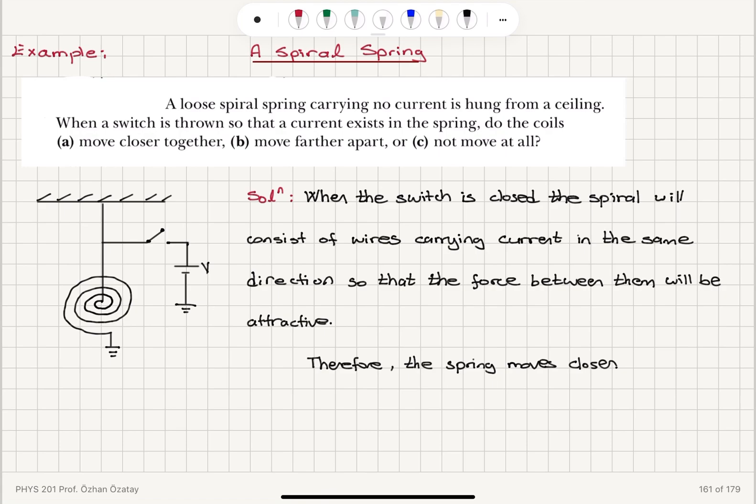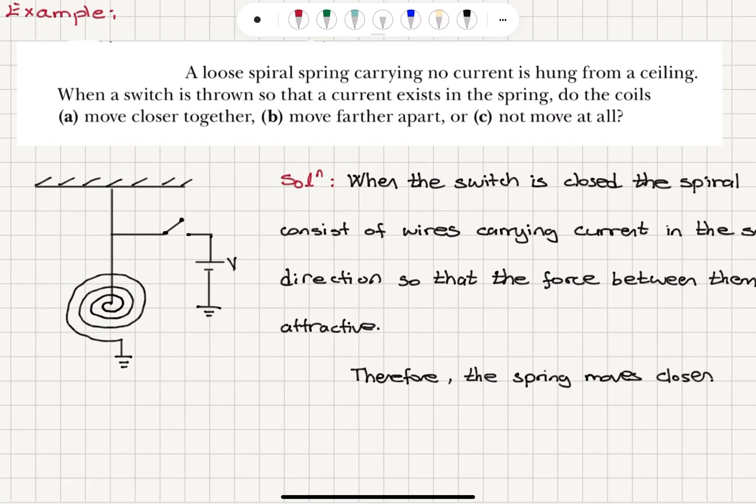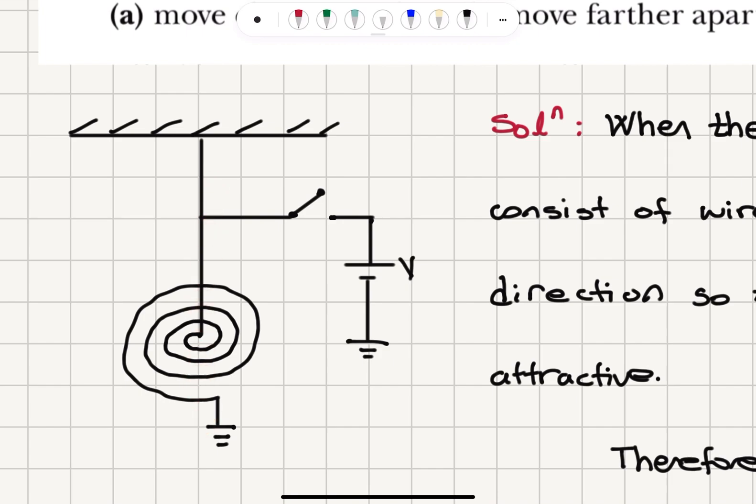Okay, so we talked about a loose spiral spring that is hung from a ceiling. Initially, it carries no current. Then it is connected to a battery and it carries a current. So what will be the direction of this current? The current will flow towards the ground. So basically, we will have the current flowing in this direction.